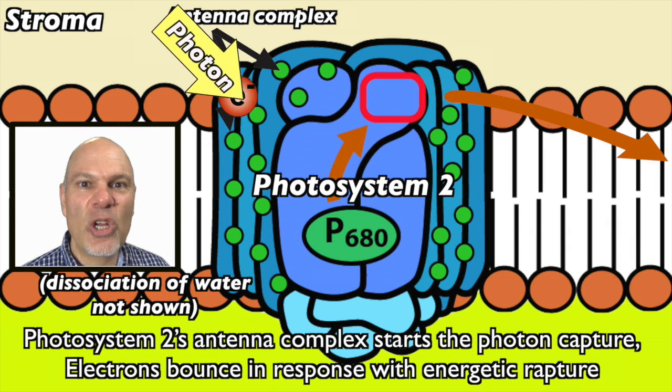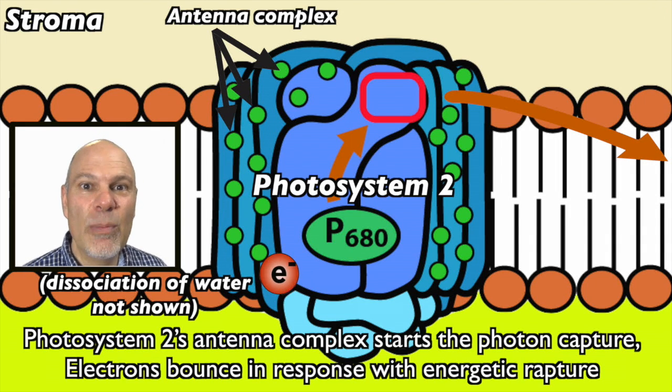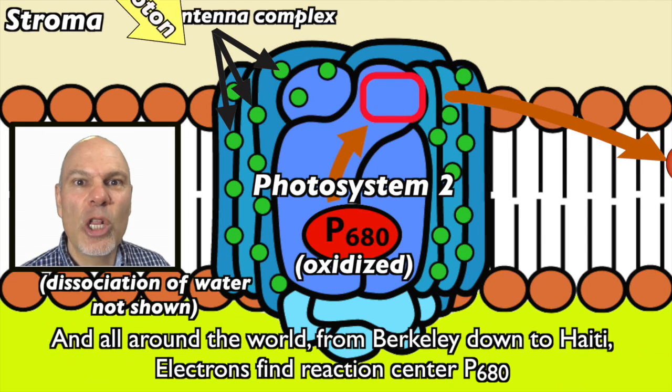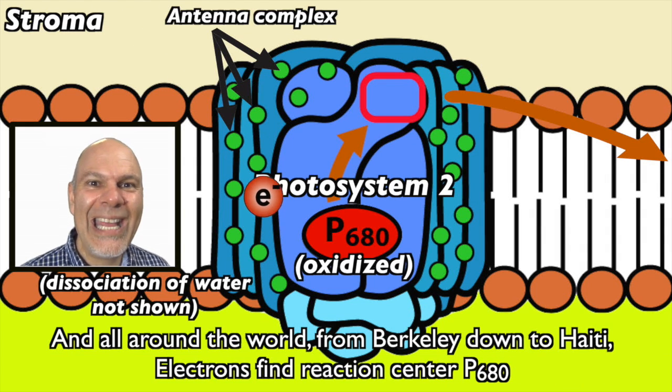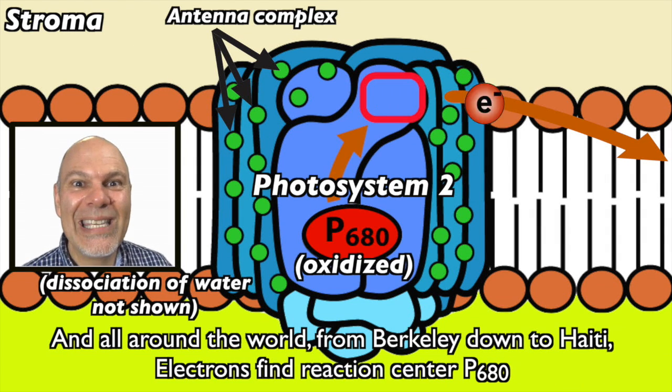Photosystem 2's antenna complex starts to photon capture. Electrons bounce in response with energetic rapture. And all around the world, from Berkeley down to Haiti, electrons find reaction center P680.